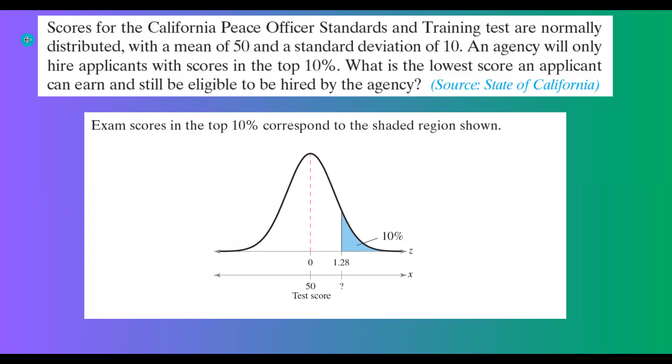Important question! Scores for the California Peace Officer Standards and Training tests are normally distributed with a mean of 50 and a standard deviation of 10. An agency will only hire applicants with scores in the top 10%. What is the lowest score an applicant can earn and still be eligible to be hired by the agency?